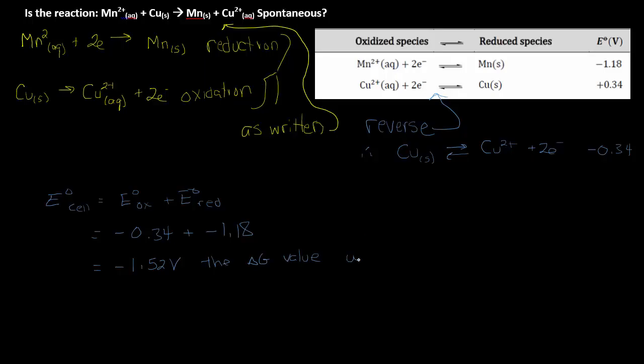If I were to put this into our Gibbs equation, this is going to result in a positive value for delta G, which we know from our work in the energetics unit means the reaction is non-spontaneous. So as written, that reaction will not occur.